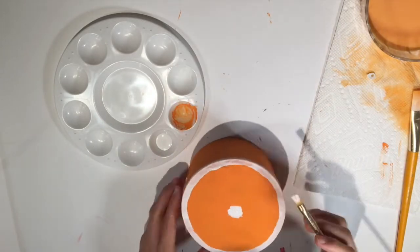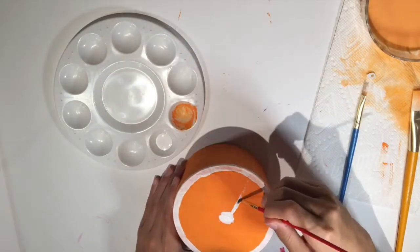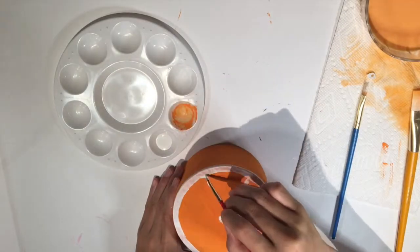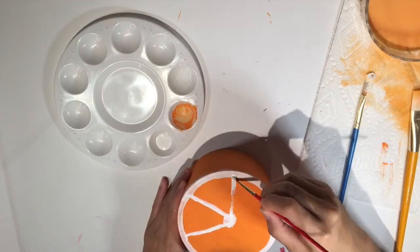And then I am painting the lines to sort of divide the orange into slices. Now this may look super messy right now, but it's mainly just a sketch that I'll fix up later.